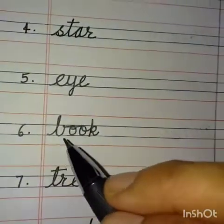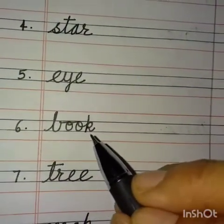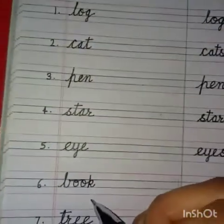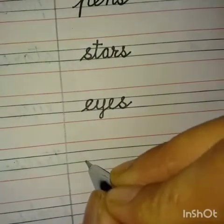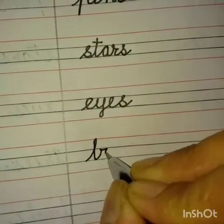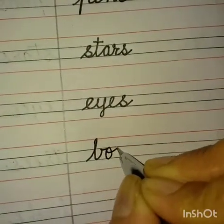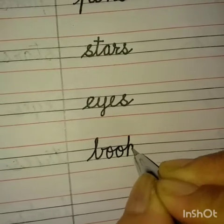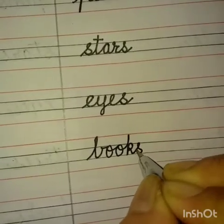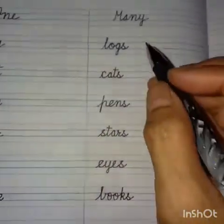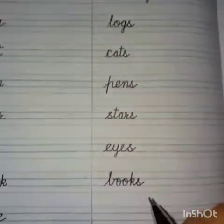Number six: B-O-O-K — Book. One book. For many: B-O-O-K-S — Books. Many books.